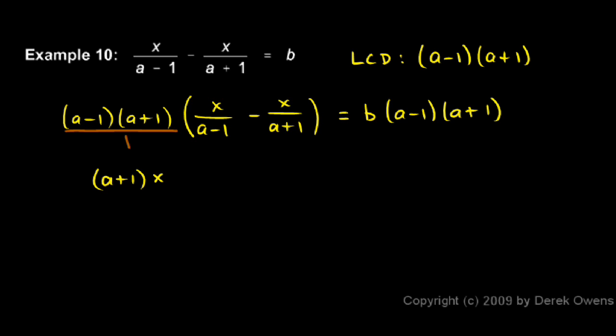Then I have this minus sign. Now I multiply all of this (a minus 1)(a plus 1) times this term, and when you do that, you can see that the (a plus 1) factor cancels the a plus 1 in the denominator, leaving us with (a minus 1) times x.